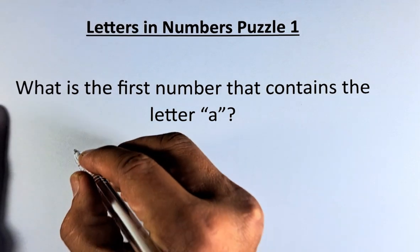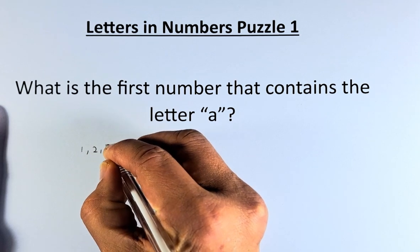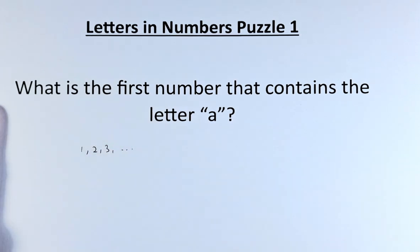So if you start with 1, 2, 3, and you spell it out, there is no number that has the letter A.